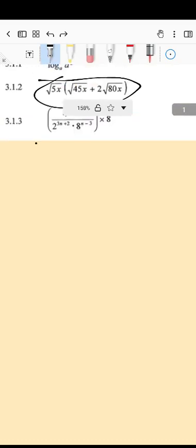So inside our bracket we have this, outside is this square root of 5x. That's going to stay outside.